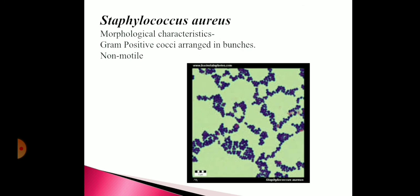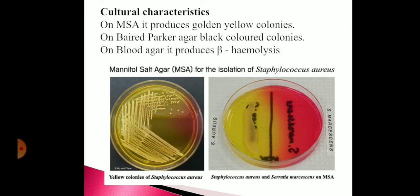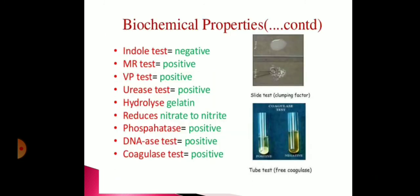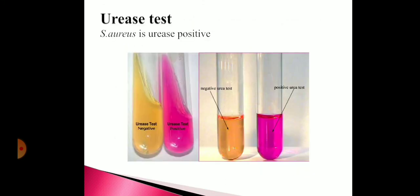To summarize the identification of Staphylococcus aureus: morphologically, it is gram-positive cocci arranged in bunches and non-motile. Culturally, it produces golden yellow colonies on mannitol salt agar, black-colored colonies on Baird-Parker agar, and beta hemolysis on blood agar. Biochemically, it ferments all sugars — lactose, mannitol, glucose — with only acid and no gas. IMViC: indole weakly positive or negative, MR and VP positive, citrate negative. It is strongly urease positive, giving dark pink color on urea agar, and catalase positive.